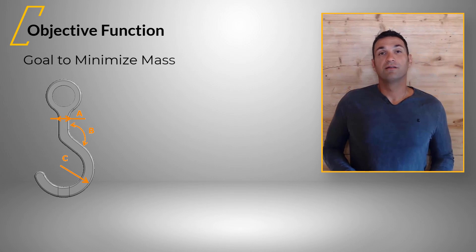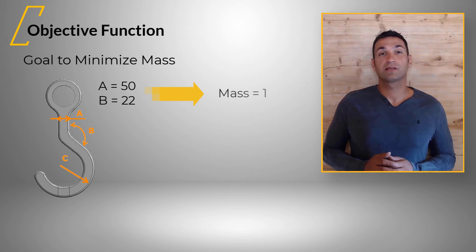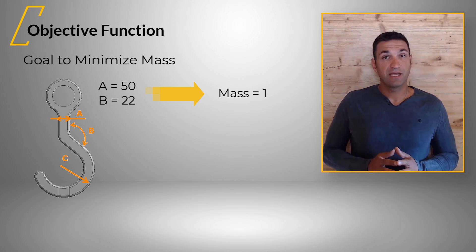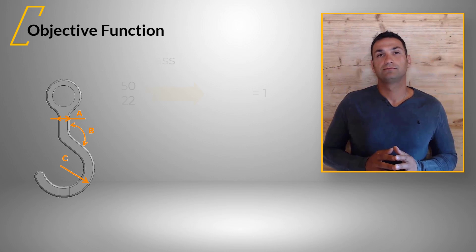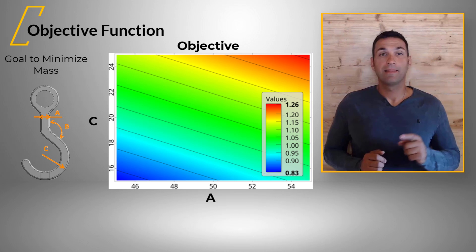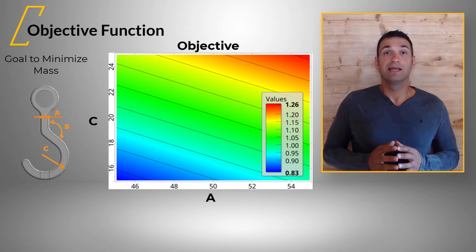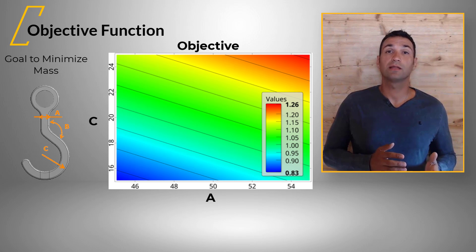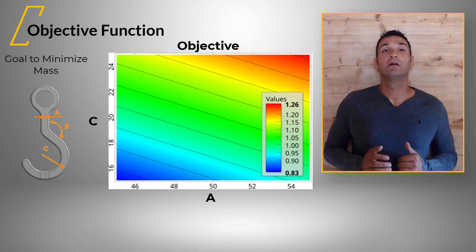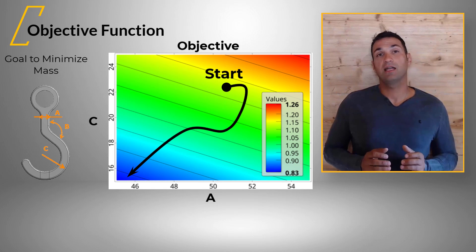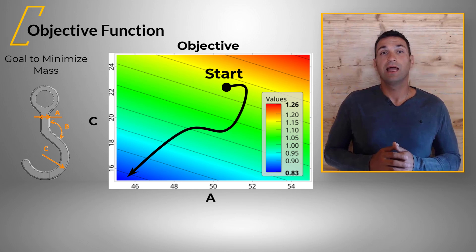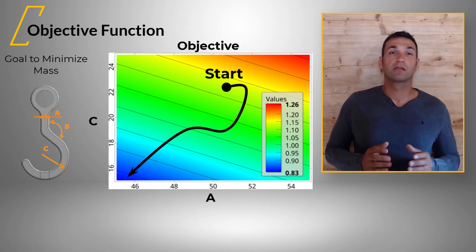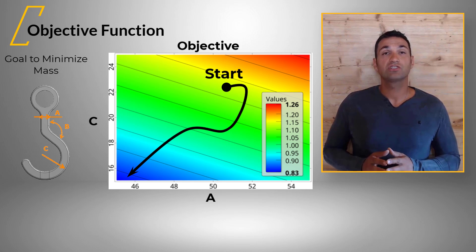The objective has, for a combination of parameters, a certain value, and all of these in the design space give you the objective function. Imagine for the hook this objective function that is, for instance, dependent on the parameters a and c — the color of the contour plot indicates the value of the objective. We start with our initial design at a certain point in the design space, and our goal for optimization is to find the minimum. To achieve that, we need to change the design parameters.